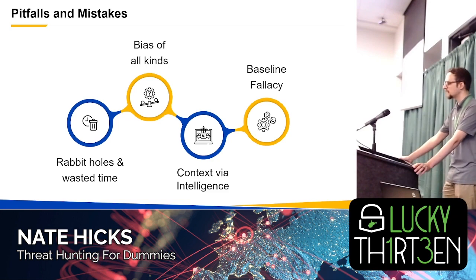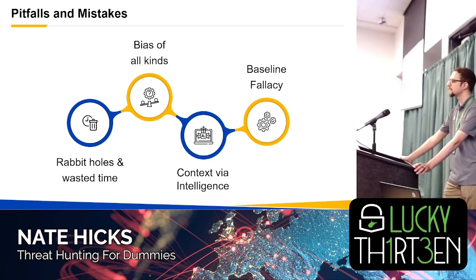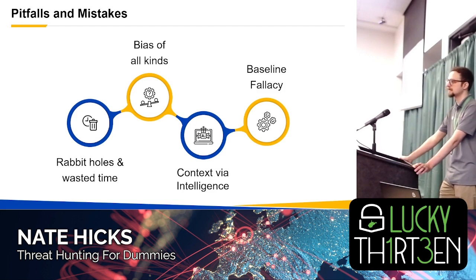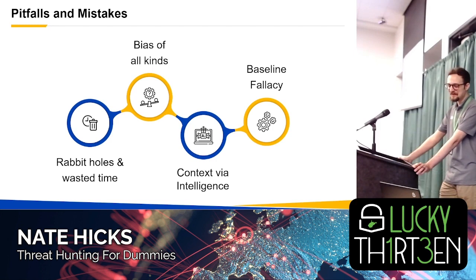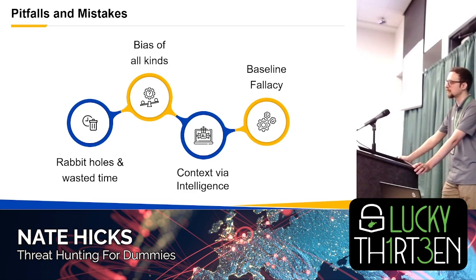And then baseline fallacy: a lot of people use tools to establish what's 'normal' in their network — this is the status of my network, this is what it's supposed to look like. But how do you know you weren't compromised when you took your baseline? And how do you know what 'no good' looks like? Having procedures and making sure your gold images are actually gold is incredibly important.